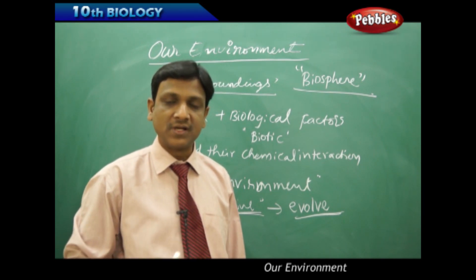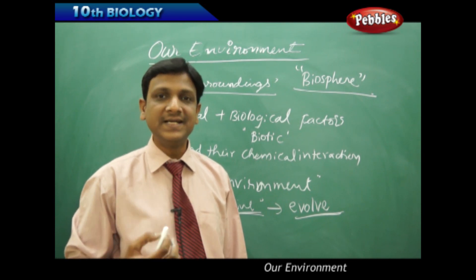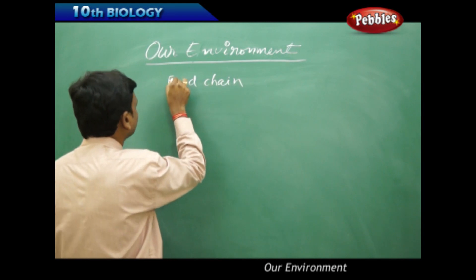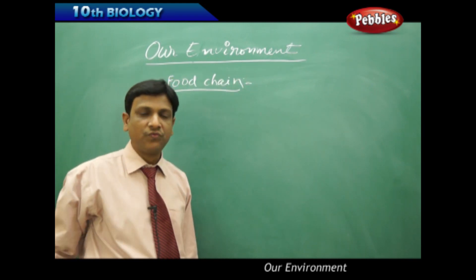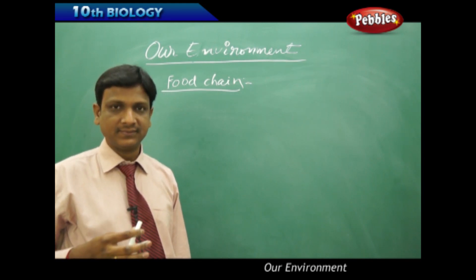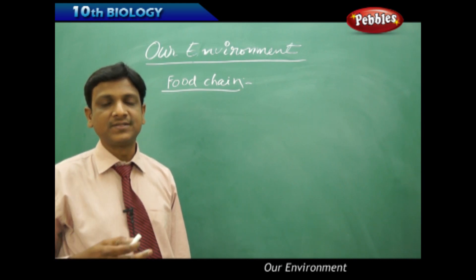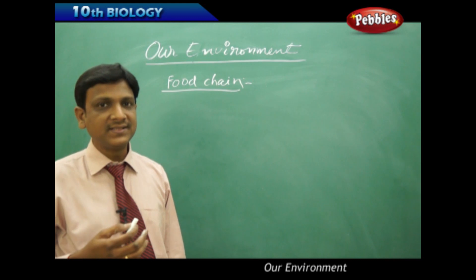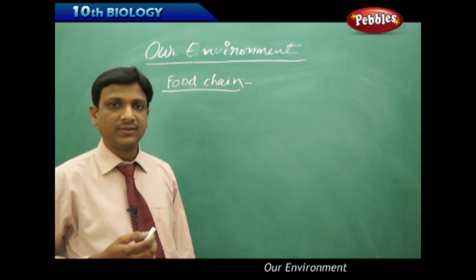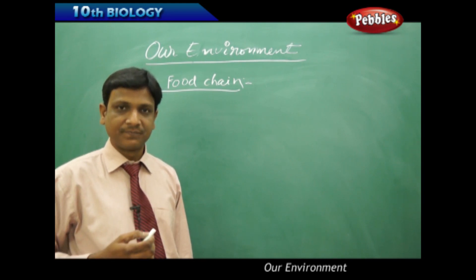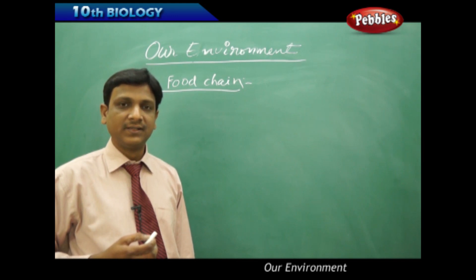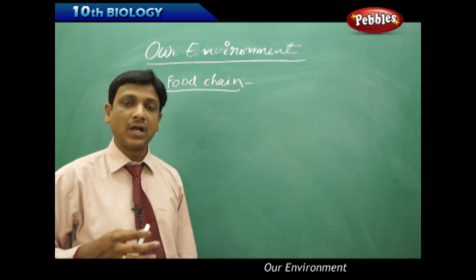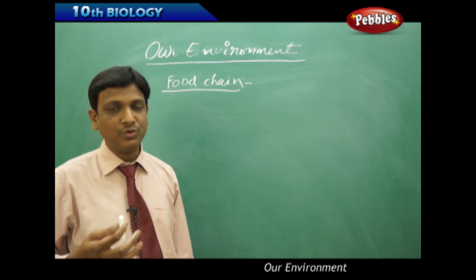We have seen how food chains and food webs are formed. Let us understand these relations in detail. A food chain is a chain which depicts the link or interaction between different organisms based upon their food requirement. Different organisms are dependent on different organisms, and their dependency is depicted in the form of a chain called a food chain. One organism can be part of one or many other food chains, and this interlinking of food chains gives you a food web.